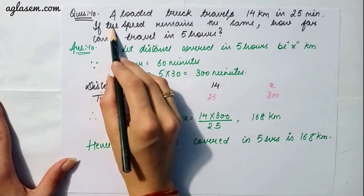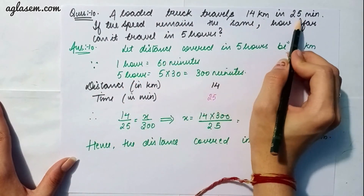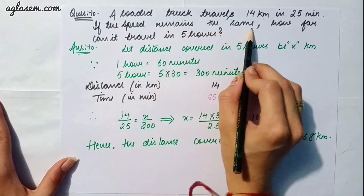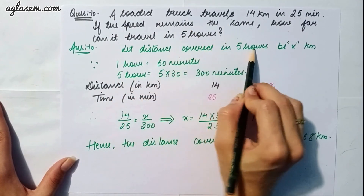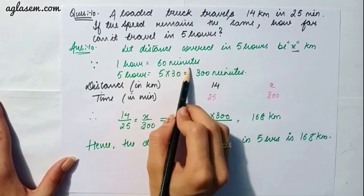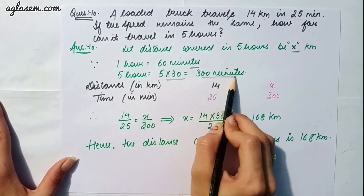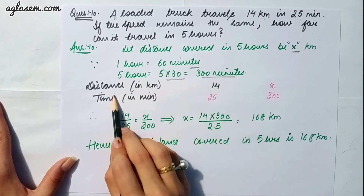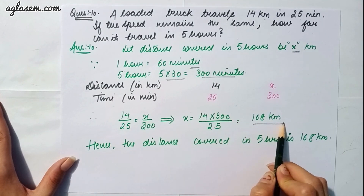Question 10: A loaded truck travels 14 km in 25 minutes. If the speed remains the same, how far can it travel in 5 hours? Let the distance in 5 hours be x km. 5 hours = 300 minutes. Using distance and time in direct proportion, making an equation we get x = 168 km. So the distance covered in 5 hours is 168 km.